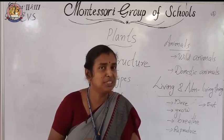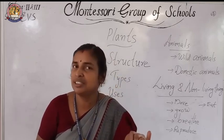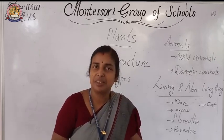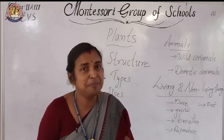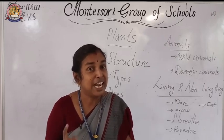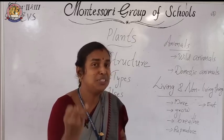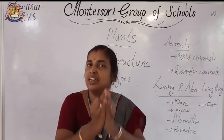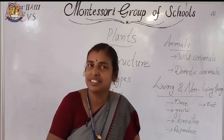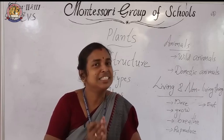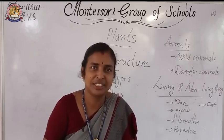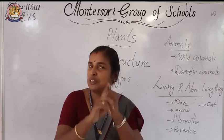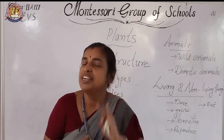What are the functions of root? Absorption, storage, and fixation. What is the function of stem? Transportation of food, water, and minerals; it keeps the plant erect; and storage. Then what is the function of leaf? Photosynthesis and transpiration.